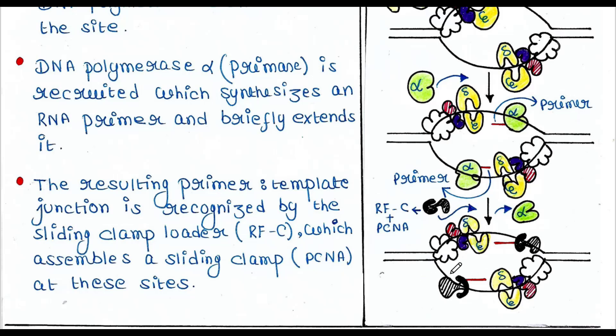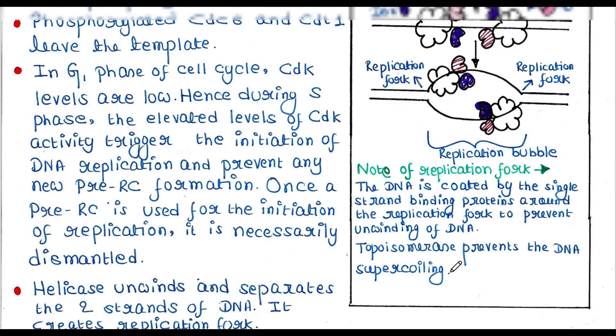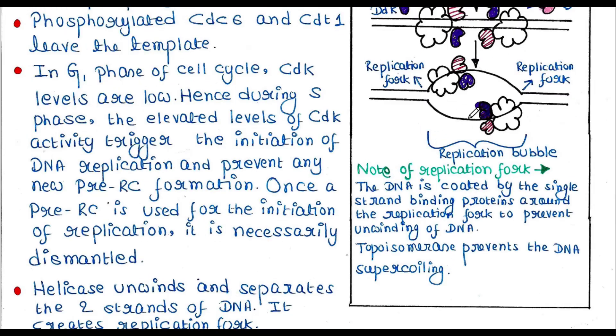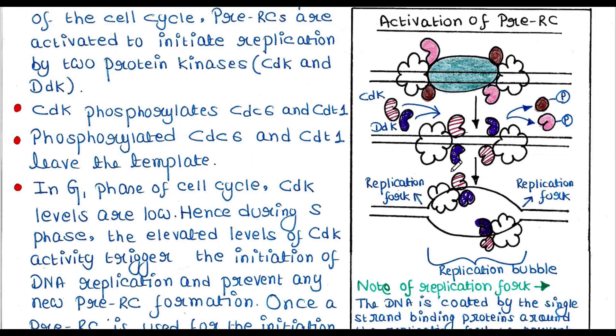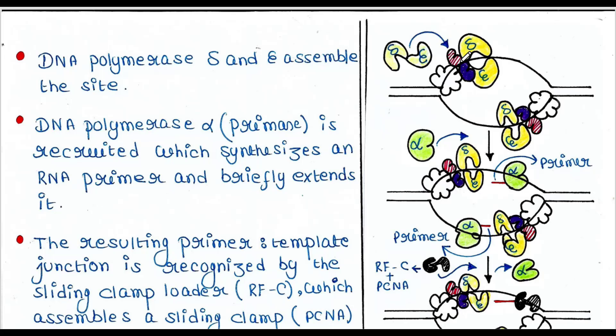So here now we have this complex. We have the CDK and DDK and the helicase. So CDK, DDK, this helicase, here we have the polymerase delta and epsilon.